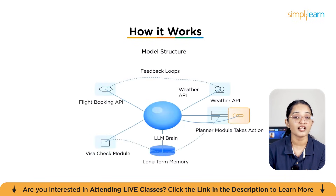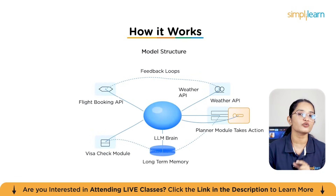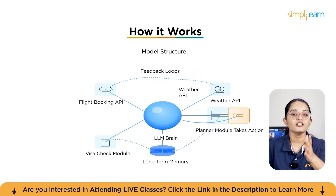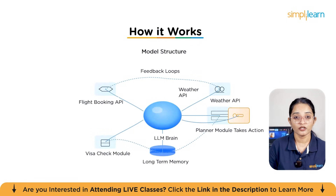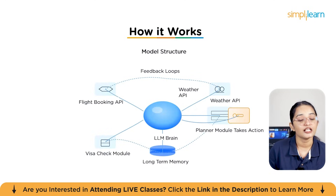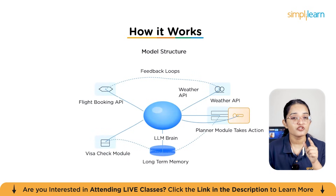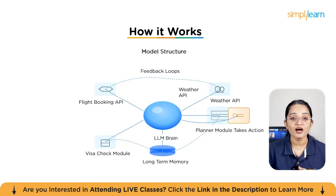You can think of agentic AI not as a single tool but as a whole system working together. At the center we have the LLM brain, which doesn't do everything itself but connects with different agents, each with its own tool — for example, one agent might use a flight booking API, another might check the weather, and another could handle a visa requirement check. A planner module acts like a project manager — it decides the order: first check the visa, then look for flights, finally confirm the weather. Agentic AI also has long-term memory, so it remembers where it left off and keeps track of progress. If something changes — like a flight gets cancelled — the system uses feedback loops to adjust the plan and find another option instead of starting from scratch.